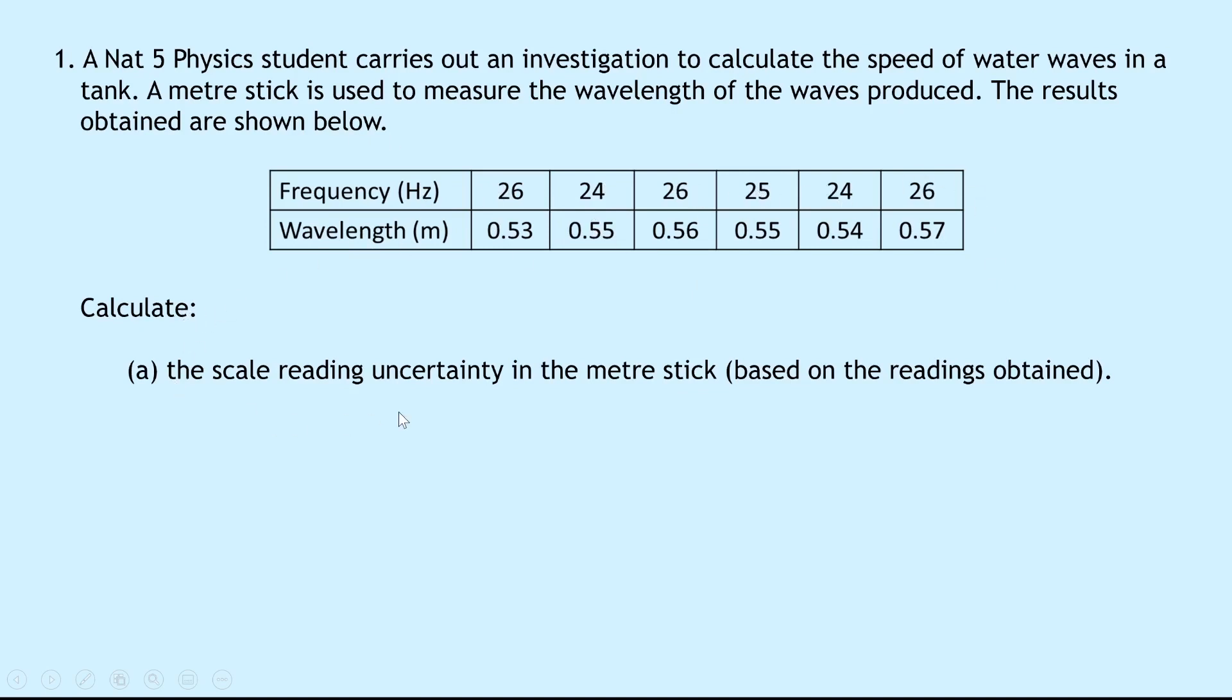Part A says calculate the scale reading uncertainty in the meter stick based on the readings obtained. Obviously we can't see the meter stick, but we should know from the wavelength readings that the smallest scale division is going to be 0.01. So using our relationship that we've learned for reading uncertainty in an analog scale, this is equal to plus or minus half of the smallest scale division. So if our smallest scale division is the 0.01 from these readings, then it's going to be plus or minus a half of 0.01 meters, which gives us plus or minus 0.005 meters.